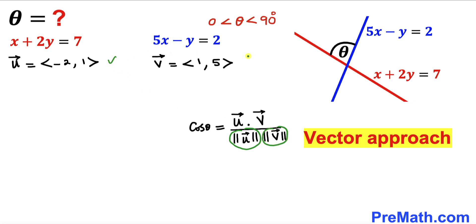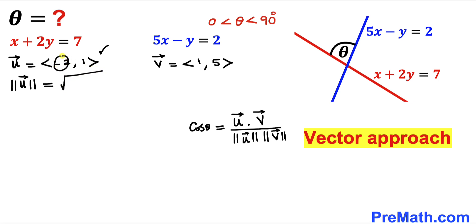Let's focus on vector u — its magnitude is going to be the square root of negative 2 squared plus 1 squared.